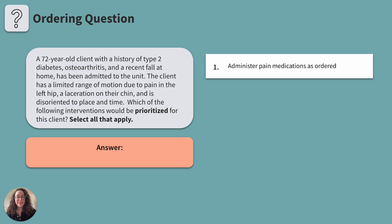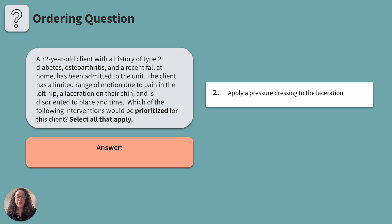Second, apply a pressure dressing to the laceration. Do we think this is an appropriate intervention for this client? No, it is not. While addressing the laceration and monitoring for signs of infection are important components of wound care, the application of pressure dressings are typically used to control bleeding in wounds with significant hemorrhage. In this scenario, there is no mention of the wound actively bleeding or indications of a significant hemorrhage.